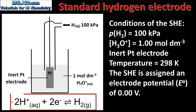Here we can see the half equation for the reaction that takes place in the SHE. Either hydrogen ions are reduced to form hydrogen gas, or hydrogen gas is oxidized to form hydrogen ions.